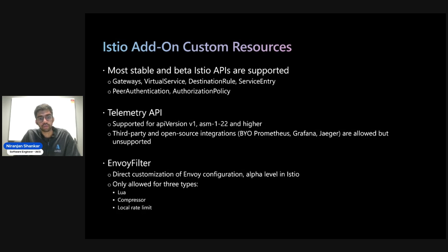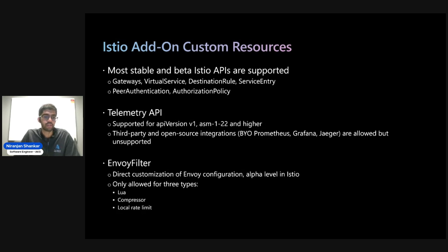One example that falls into the allowed but unsupported territory is some of the telemetry API options. We do support the telemetry API for ASM 1.22 and higher for API version v1, when telemetry API was promoted to v1 in open source Istio. However, for third-party and open source integrations through the telemetry API, these are allowed but not covered by Azure support. Instead, we recommend using Azure-managed observability options such as Container Insights or Azure Managed Prometheus to receive support from Azure.